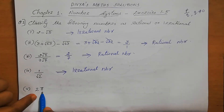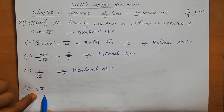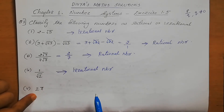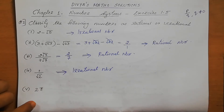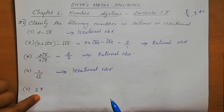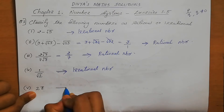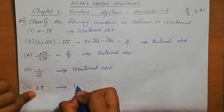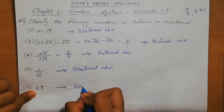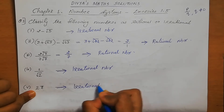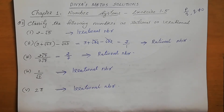2π. Pi is an irrational number. So 2 multiplied by pi — when you multiply an irrational number with an integer — the answer is an irrational number only. So 2π is an irrational number.